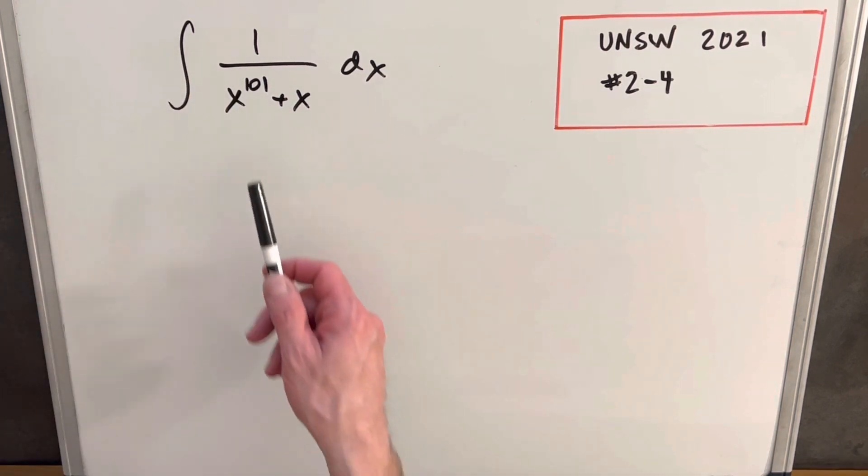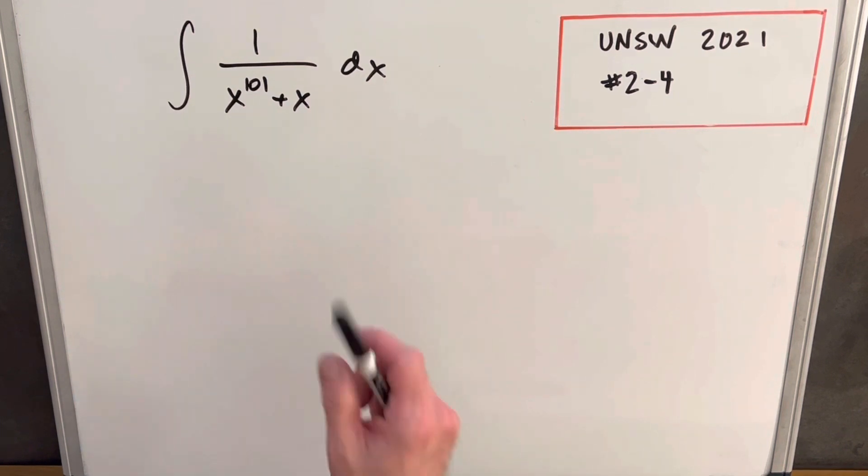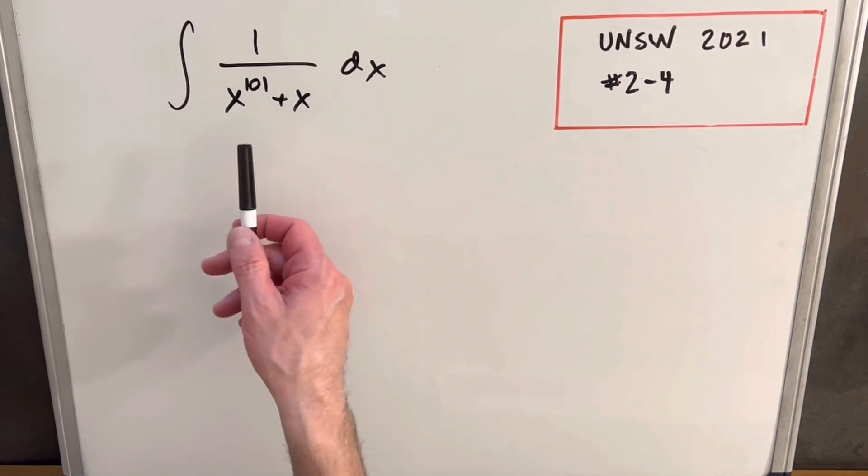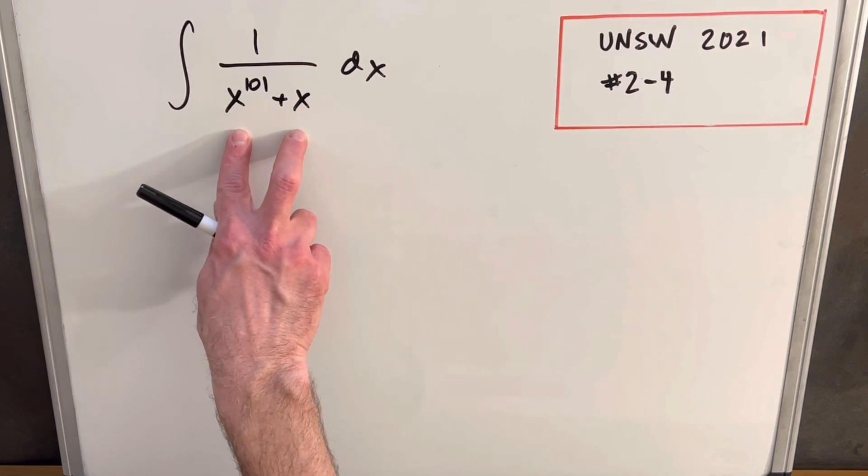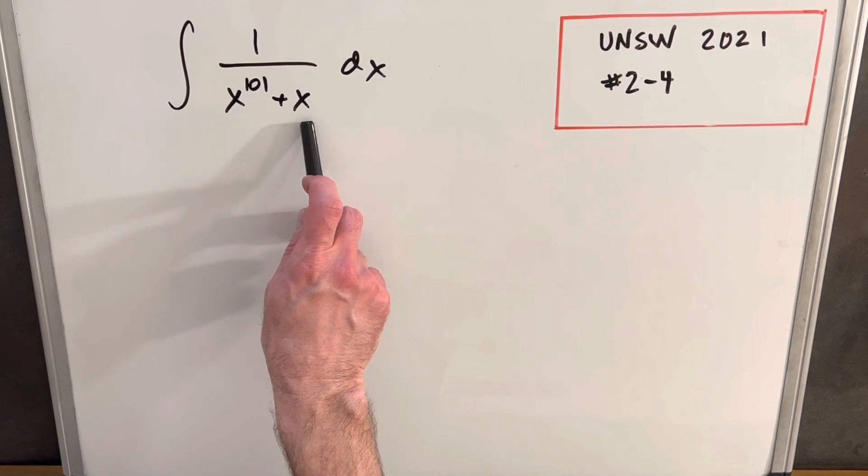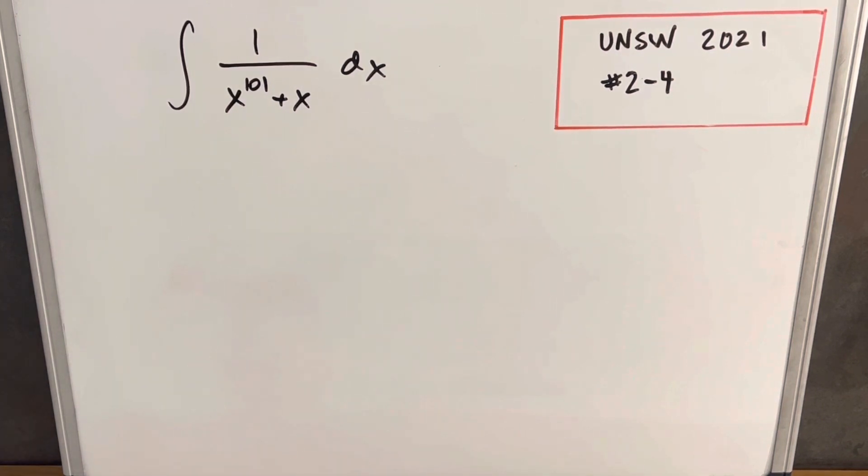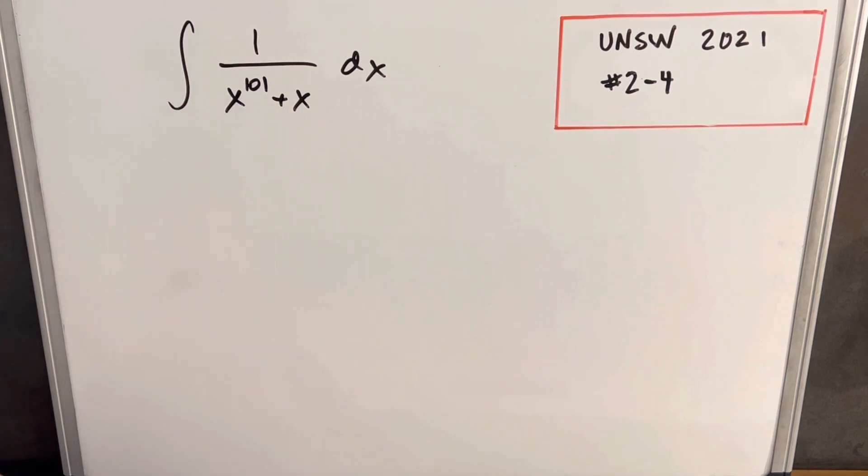I know I've done problems similar to this before where we had like x to the x cubed or whatever, and it was always kind of a choice of what are we going to factor out. We don't really want two x terms in the denominator. We like to just have one. We could factor out an x, but I think that's not going to work very well. What's going to work for us is if we factor out the x to the 101 and then we see what happens.